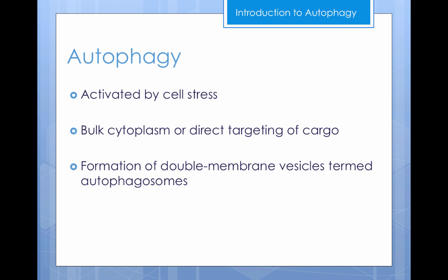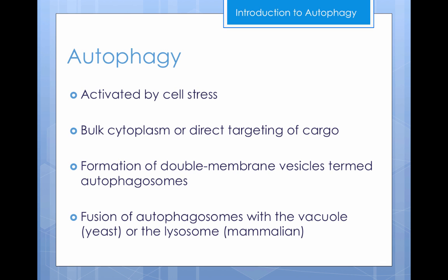During autophagy, the cell targets either bulk cytoplasm or directly targets cargo such as mitochondria or peroxisomes for degradation. Autophagy is characterized by the formation of double membrane vesicles termed autophagosomes, which subsequently fuse with the vacuole in yeast or the lysosome in mammalian cells.